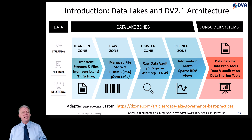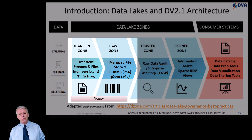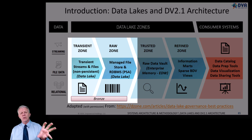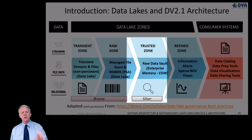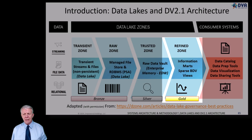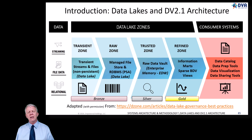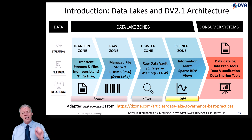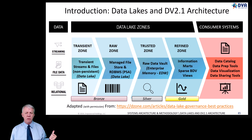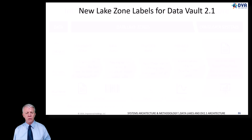How does the medallion architecture fit? The bronze level fits over the transient and the raw zone. The silver level fits over the trusted zone, and the gold level fits over the refined zone. We're not going to get too deep into that. If you want to know more about the medallion architecture and data vault, head over to the Databricks website and check out some of their blog posts on the subject.